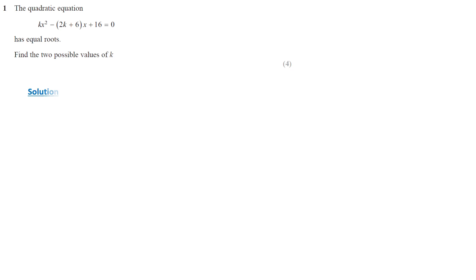In this question, the given quadratic equation has equal roots. This means the discriminant, b squared minus 4ac, must be equal to 0, where a equals k, b equals negative 2k plus 6, and c equals 16.